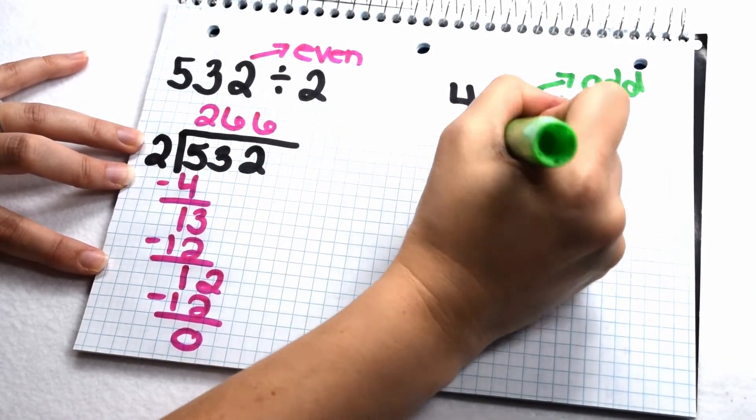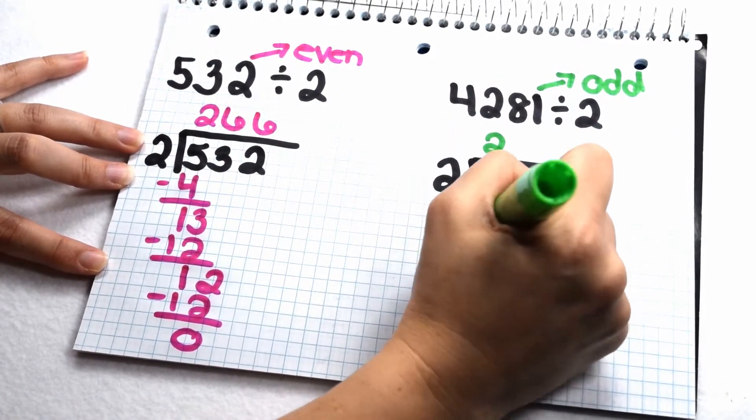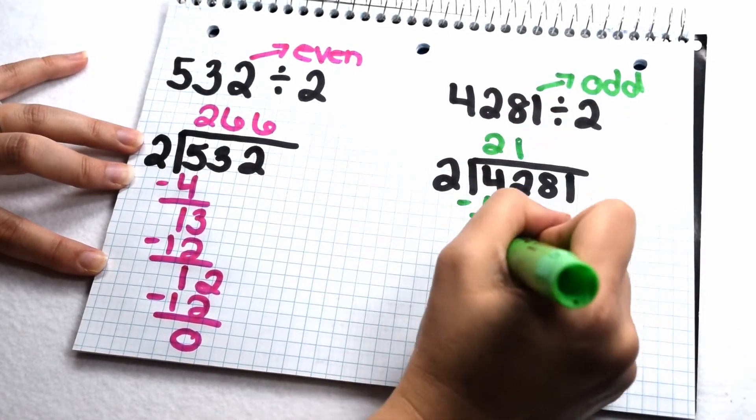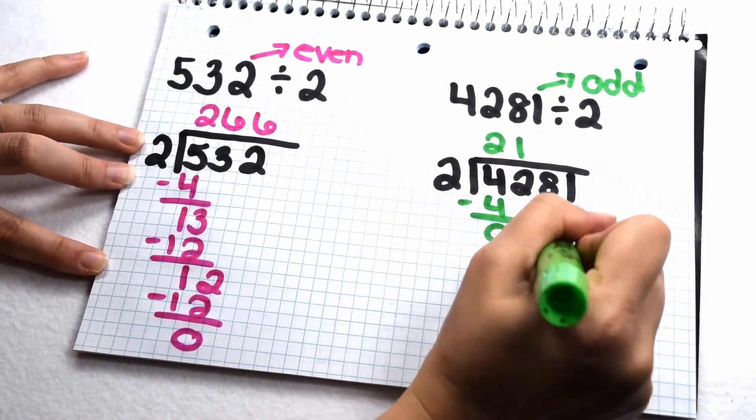When we test it out, 2 goes into 4 twice, subtract my 4, there's none left over. Bring down my 2. 2 goes into 2 once, subtract my 2, there's none left over. Bring down my 8. 2 goes into 8 four times, subtract my 8, there's none left over.